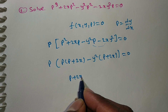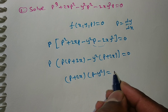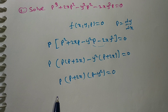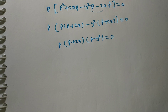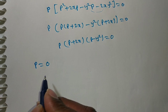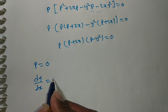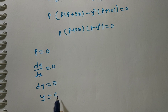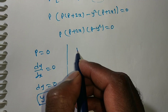So we factor as: p times (p plus 2x) times (p minus y squared) equals zero. Three solutions arise. First: p equals zero means dy/dx equals zero. Integrating: y equals c. This is the first solution.